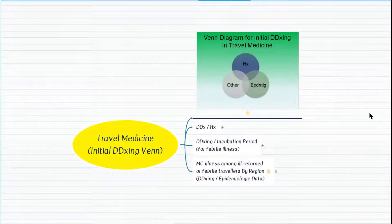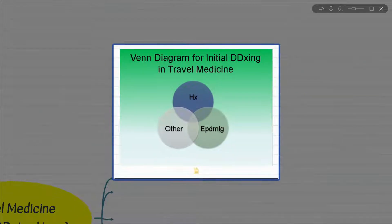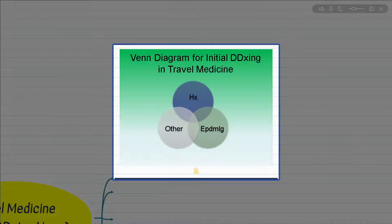In this episode, I will use the Venn Diagram approach to discuss the initial differential diagnosis in travel medicine cases. The Venn Diagram approach benefits from the overlap of several data to make a final diagnosis. I will benefit from history, epidemiologic data, and provide additional clinical information. In this episode, I will cover only the incubation period of febrile illnesses among febrile travelers, but in a different episode I will discuss different clinical findings by systems.